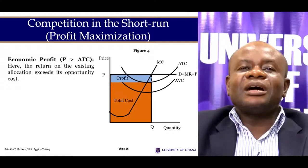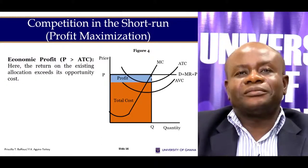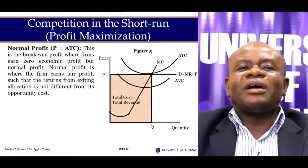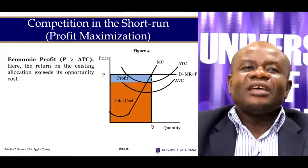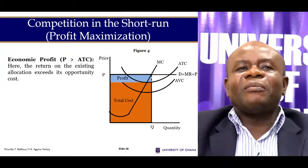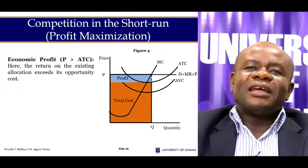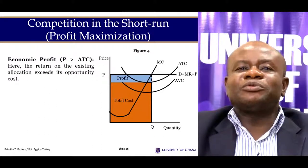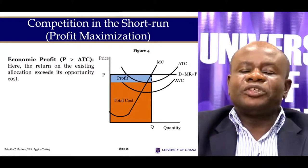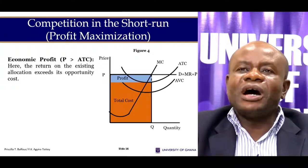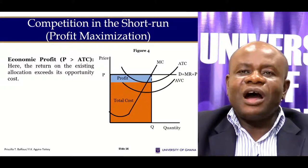Now we can talk about different types of profit that the firm can enjoy in the short run. In the short run, the firm can make losses, normal profit, or supernormal profit. To determine profit, we need to know the cost per unit of producing the commodity — in other words, we need to know our average total cost curve at each level of output.